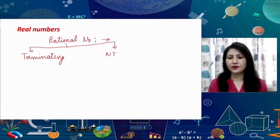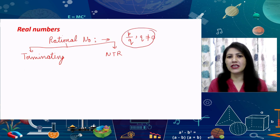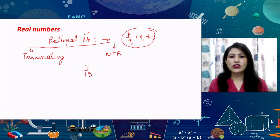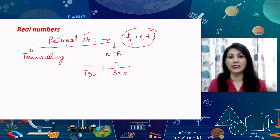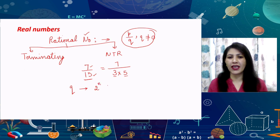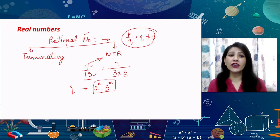We are discussing which type of numbers are known as terminating decimal numbers and which numbers have non-terminating repeating expansions. We know that all numbers which can be written in the form p by q, where q is not equal to zero and both p and q are integers, are known as rational numbers. If the factors of q are in the form 2 raised to the power n into 5 raised to the power m, then the number will be terminating; otherwise it will be non-terminating repeating.